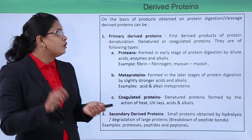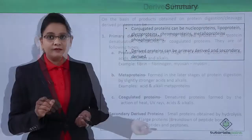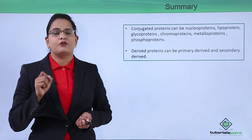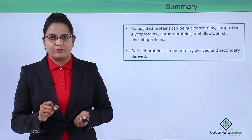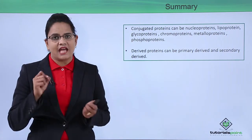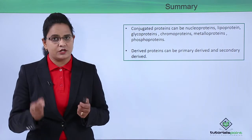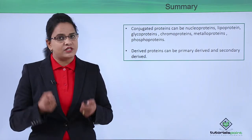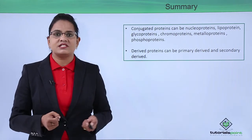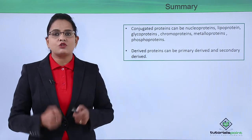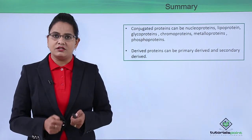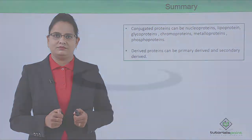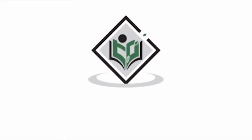To summarize: proteins on the basis of chemical composition are of two types — conjugated proteins and derived proteins. Conjugated proteins can be of several types based on the prosthetic groups: nucleoproteins, lipoproteins, glycoproteins, mucoproteins, and others. Derived proteins can be primary derived and secondary derived. In the next video we will learn about the functions of proteins. Thank you — TutorialsPoint.com, simply easy learning.